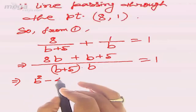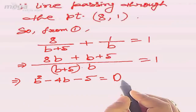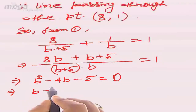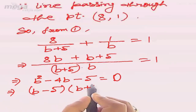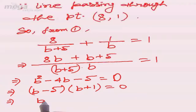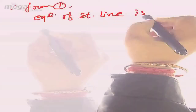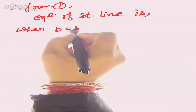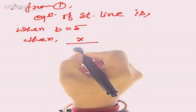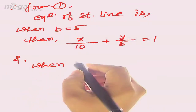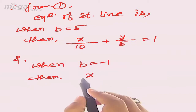After calculation, the final quadratic equation becomes b² - 4b - 5 = 0. Solving by factorization: (b - 5)(b + 1) = 0, so b = 5 or b = -1. Substituting b = 5 back into the equation gives x/10 + y/5 = 1. Substituting b = -1 gives x/4 + y/(-1) = 1.